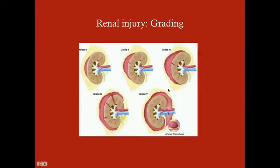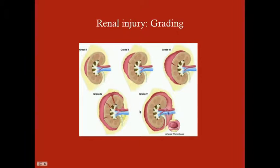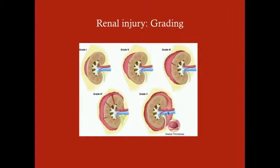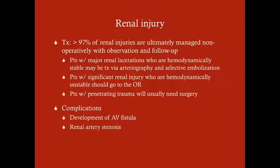Here's a picture of these grades. You can see the subcapsular hematoma for grade one, the less-than-one-centimeter laceration for grade two, greater-than-one-centimeter laceration for grade three, lacerations extending past the corticomedullary junction for grade four, and disruption of the hila for grade five. Again, don't memorize the grading — just know there is a spectrum of renal injury severity.